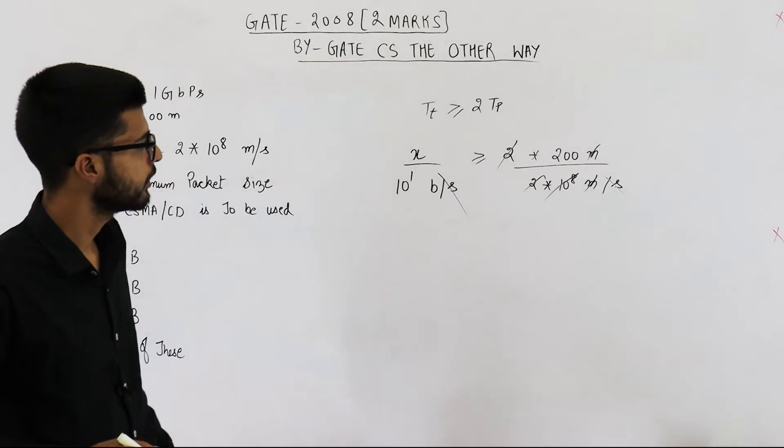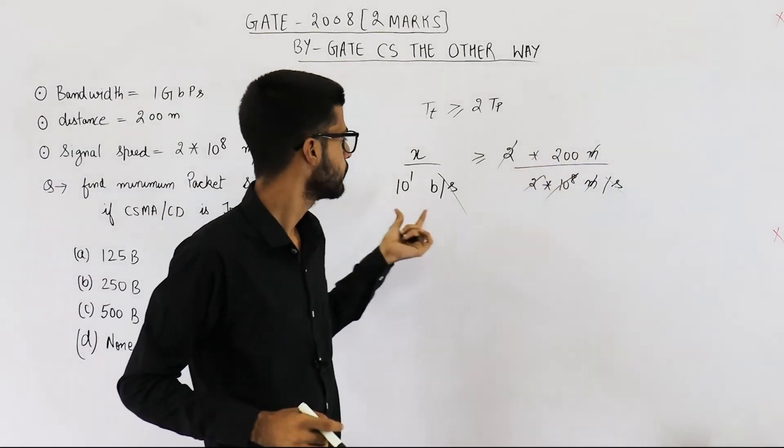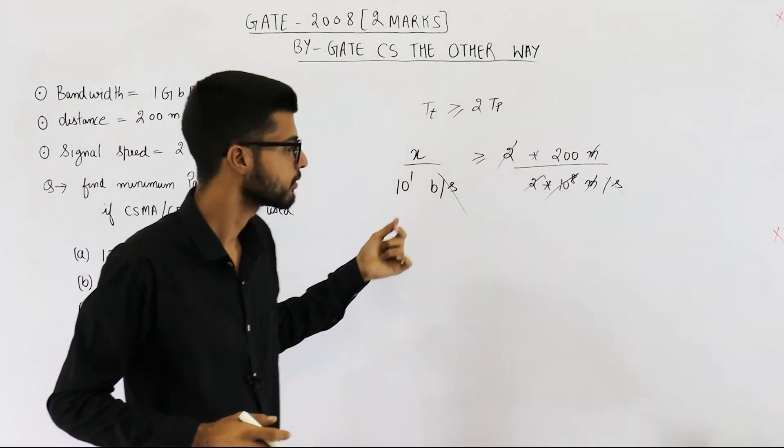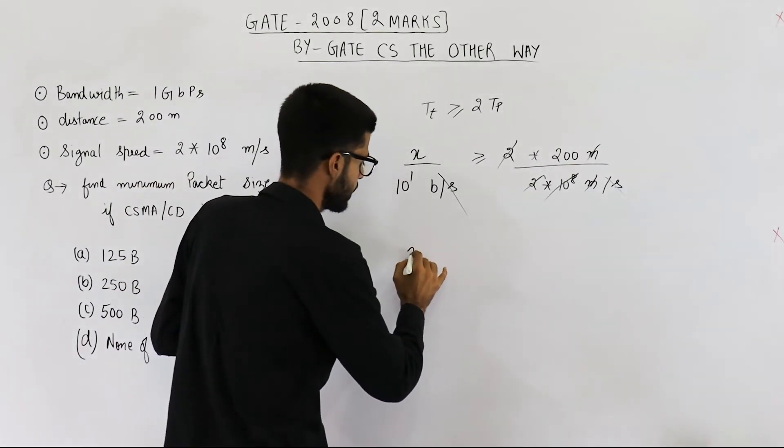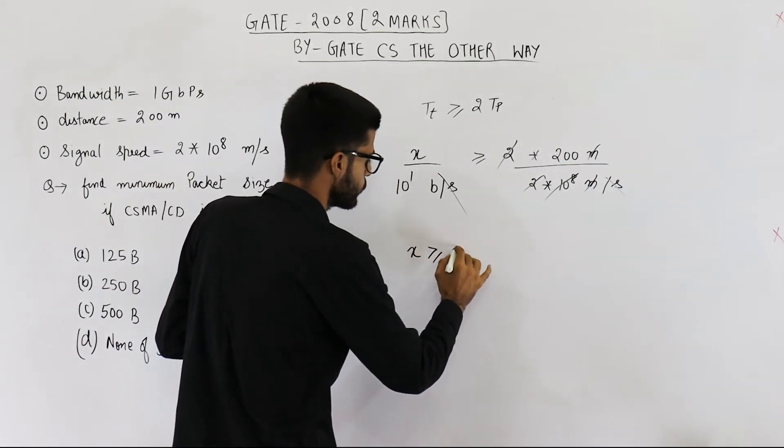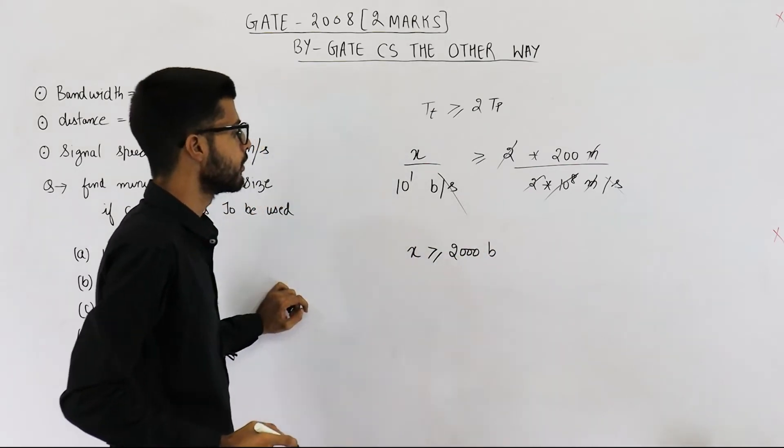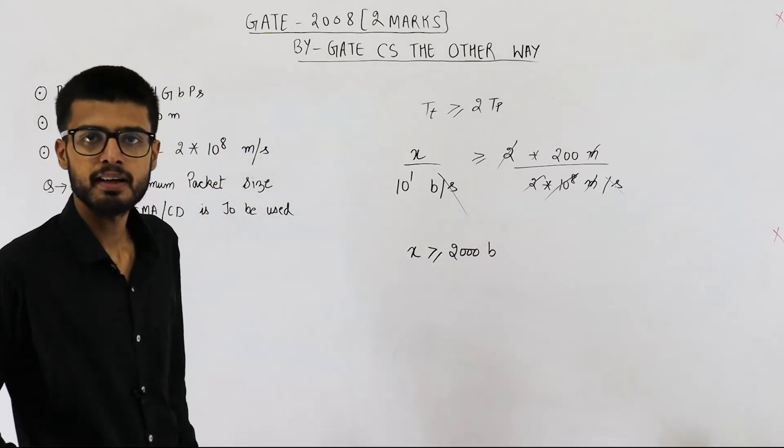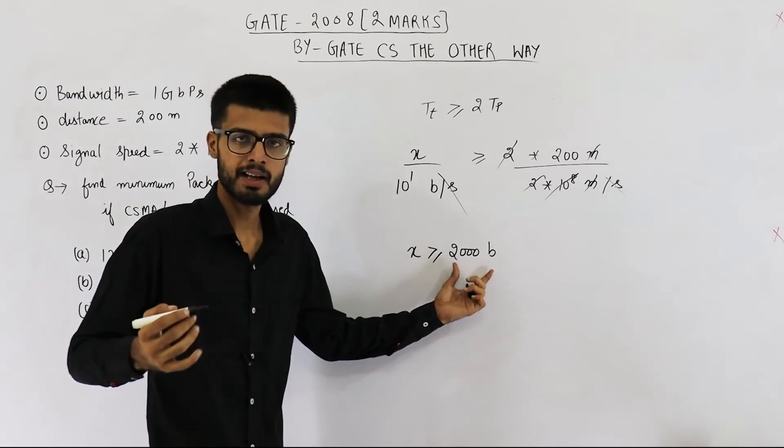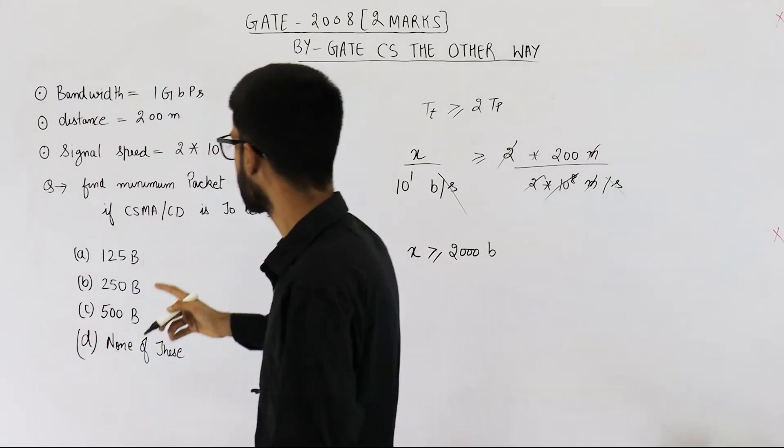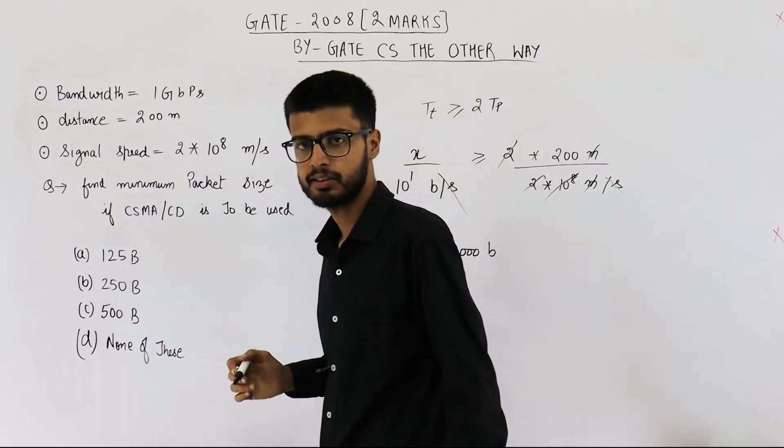Now you can see it is 200 multiplied by 10 bits. That means x is greater than or equal to 2000 bits. So the minimum value that x can take is 2000 bits. That is what they were asking. Find the minimum packet size. It's 2000 bits.